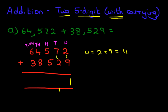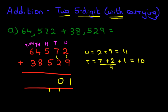Now we are going to add the tens. We have seven plus two. Now don't forget the one we have carried over. Seven plus two plus one. Seven plus two is nine, plus the one is ten. So let's write this down. One here and zero here.